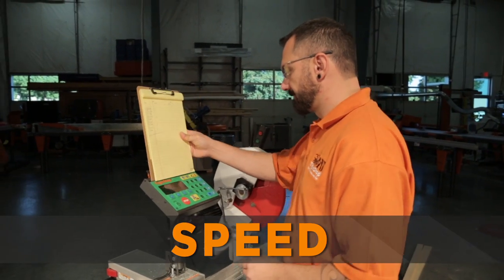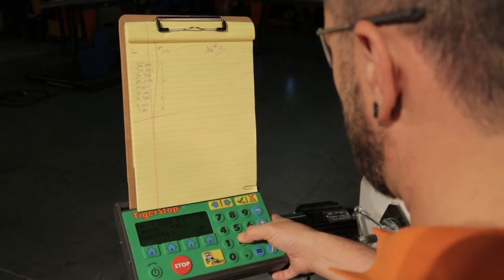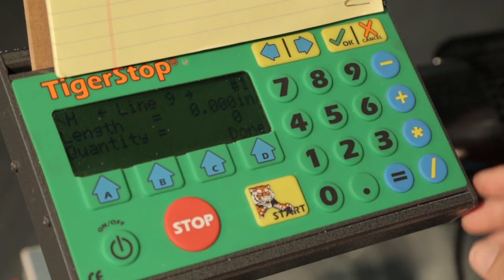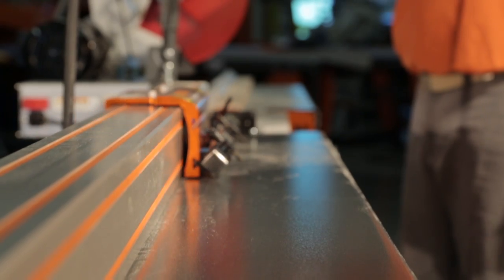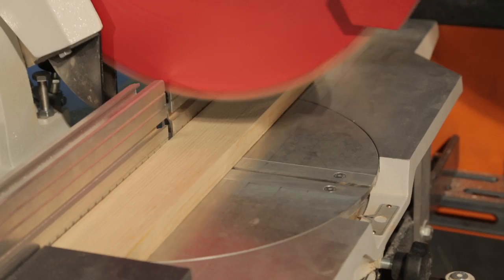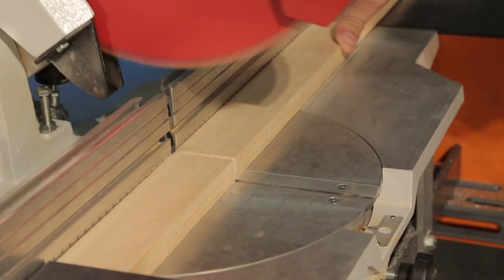Speed. Automation means faster material processing so you can process more material in a day. Just punch in your cut list, the stop moves to position, and you simply place the material and cut. So much faster than a manual stop.